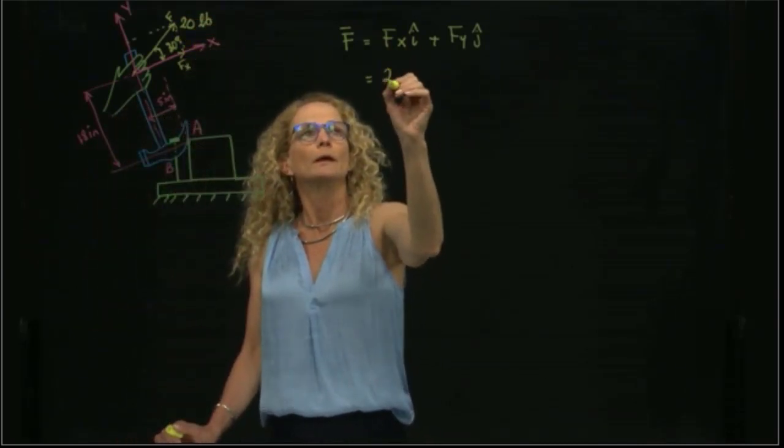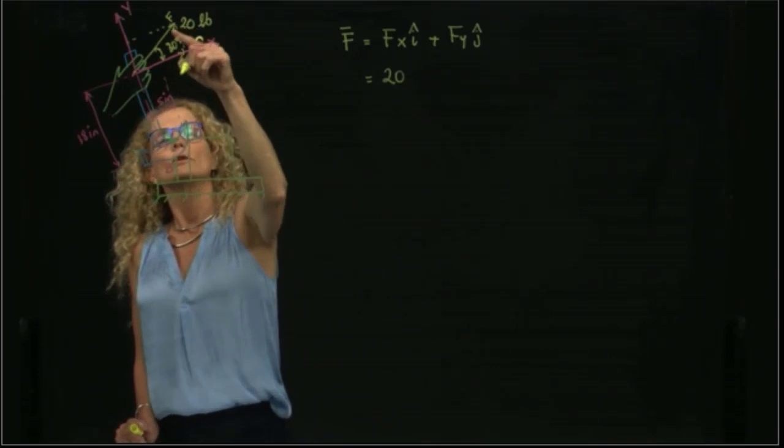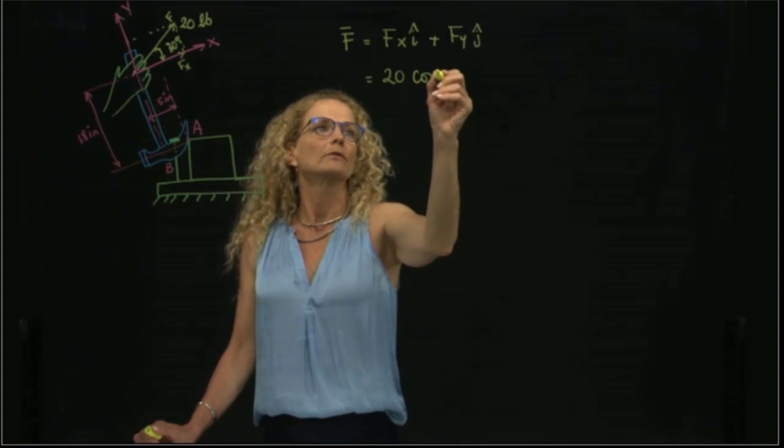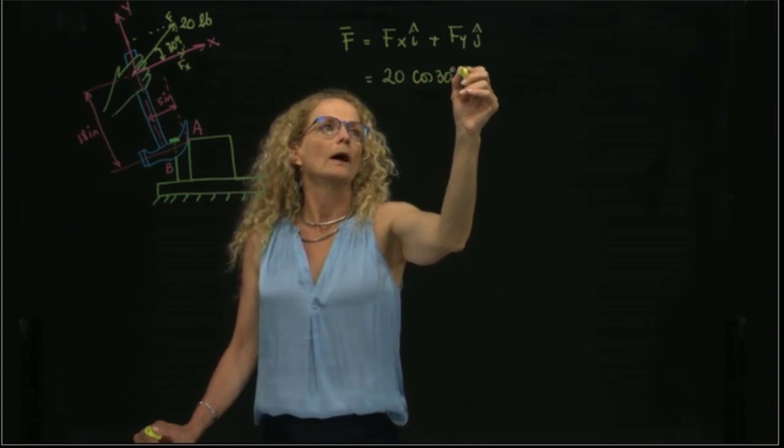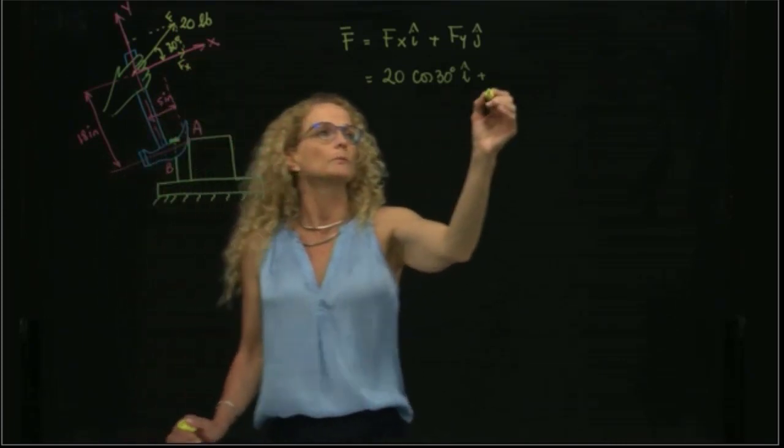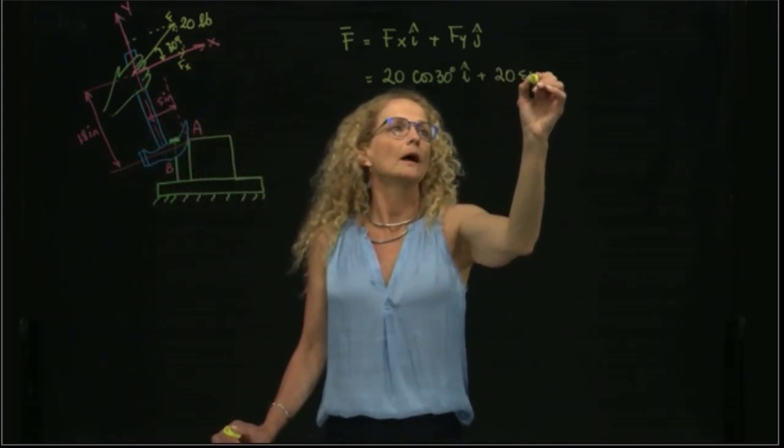And as you see, fx will be the magnitude of the force times cosine, which is the adjacent, right? Cosine of 30 in i. And in y, which is also positive, will be 20 sine of 30.